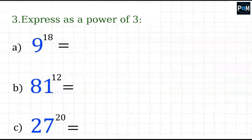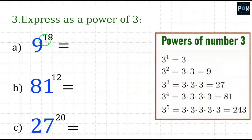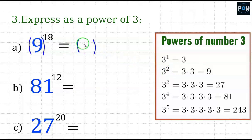Task 3 asks to express as a power of 3. It's similar to task 2. Here we have 9 to the power of 18. We'll also need a table of powers of 3 — we can see that 9, 27, 81, and 243 can all be written as powers of 3. If I have to write the result as a power of 3, I replace the 9 with 3 to the 2nd power, in parentheses, raised to the power of 18. Multiplying 2 times 18 gives 36, so the result is 3 to the power of 36.